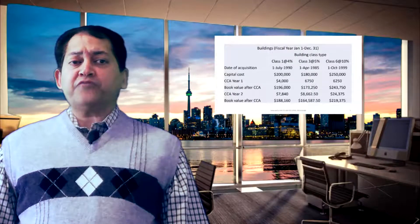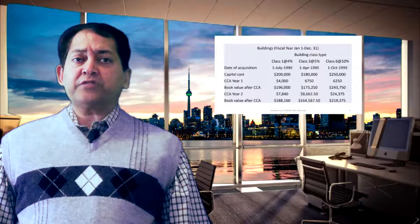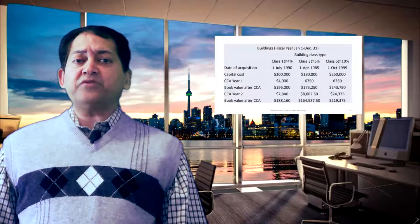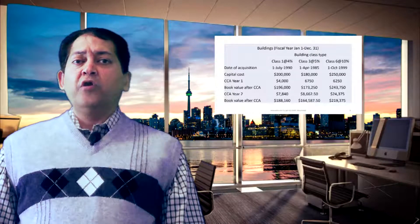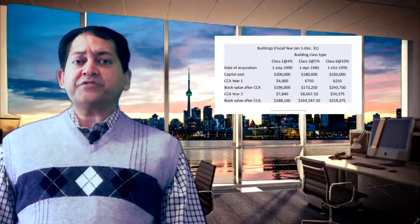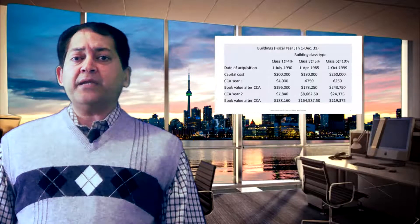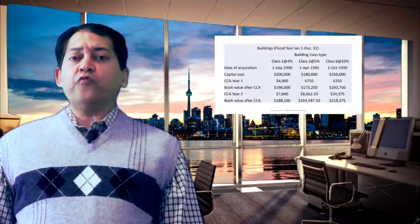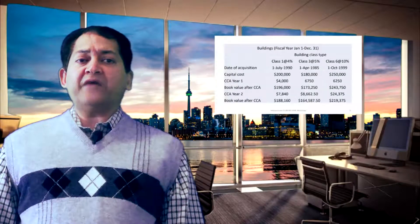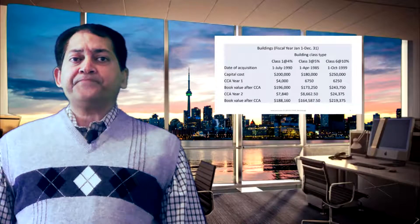Here is the book value after the first year capital cost allowance. For year 2, we charge full-year depreciation for all three buildings at the respective rates — for class 1 it is 4% of $196,000, which comes to $7,840; for class 3 it is 5% of $173,250; and for the class 6 building it is 10% of $243,750. Finally, we have the book value after capital cost allowance shown as the last line.